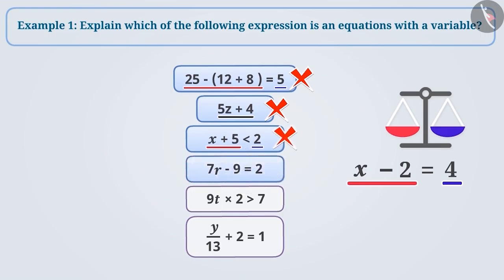7r minus 9 is equal to 2. It has two sides and they are equal. So, this is an equation.